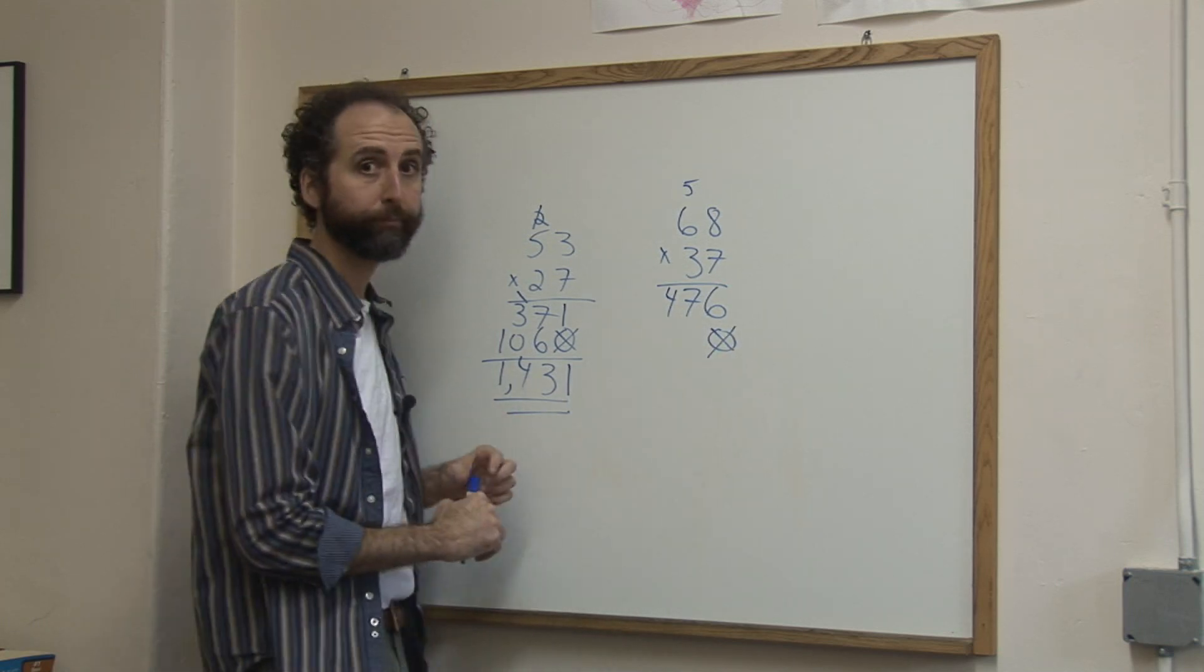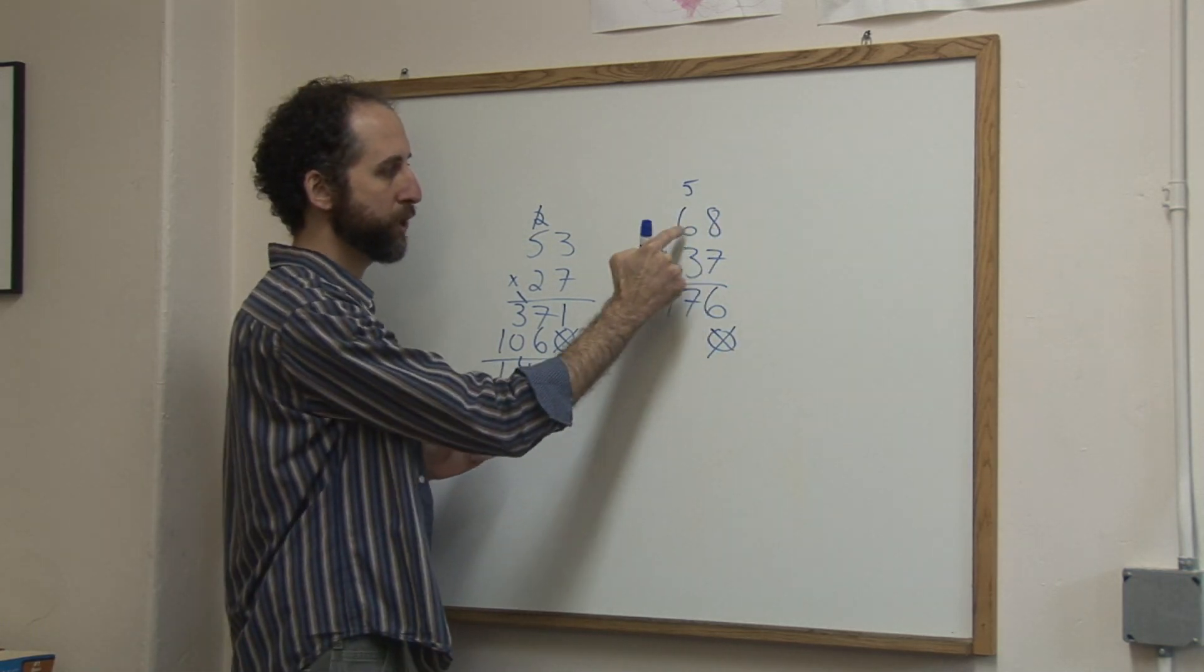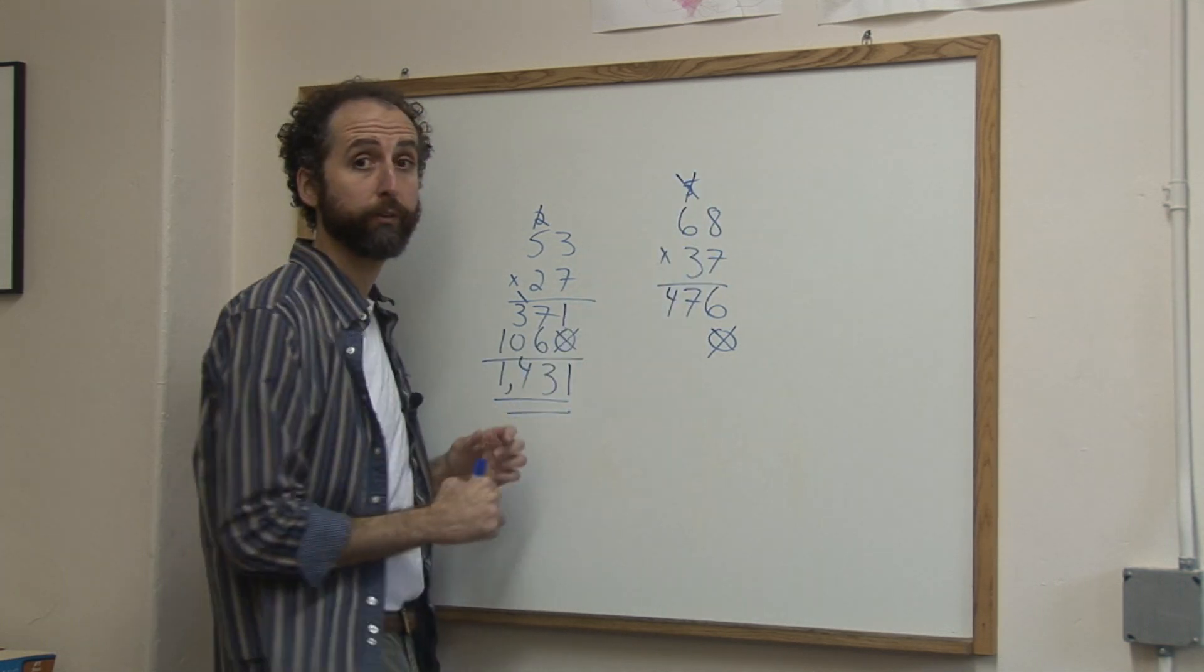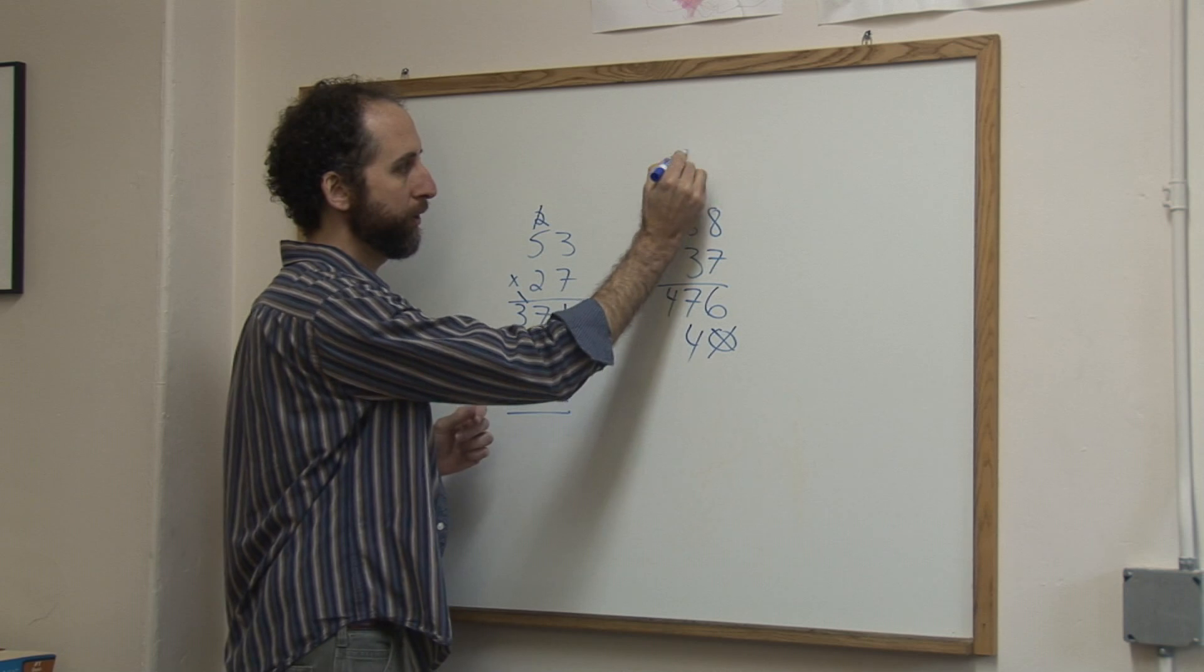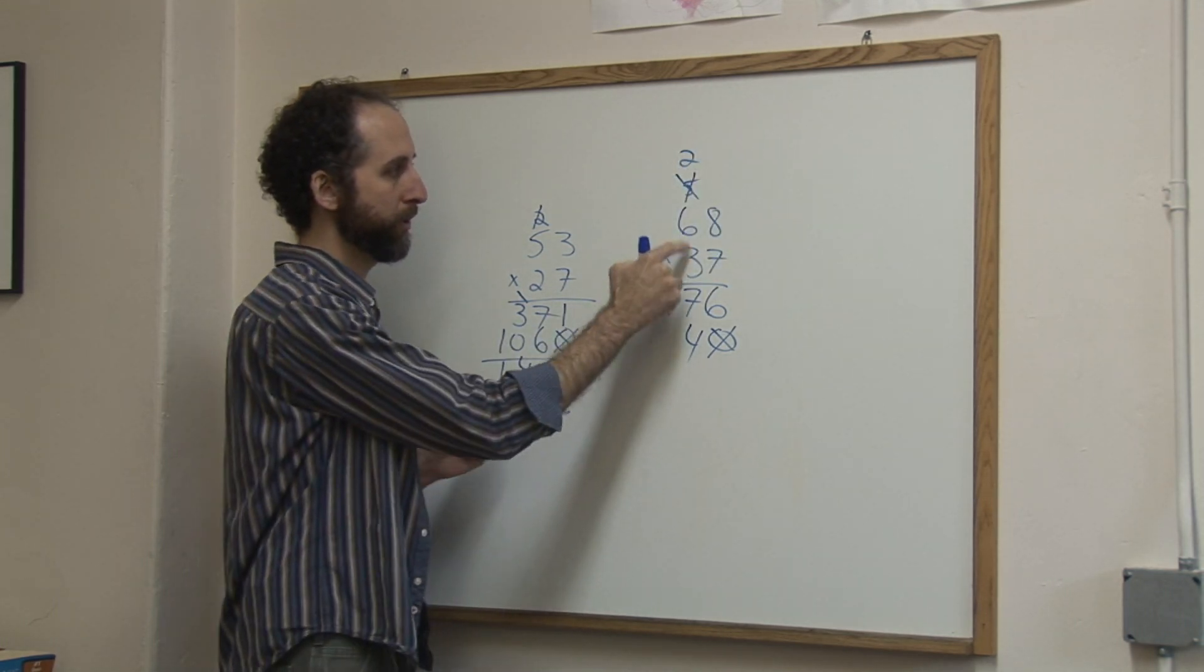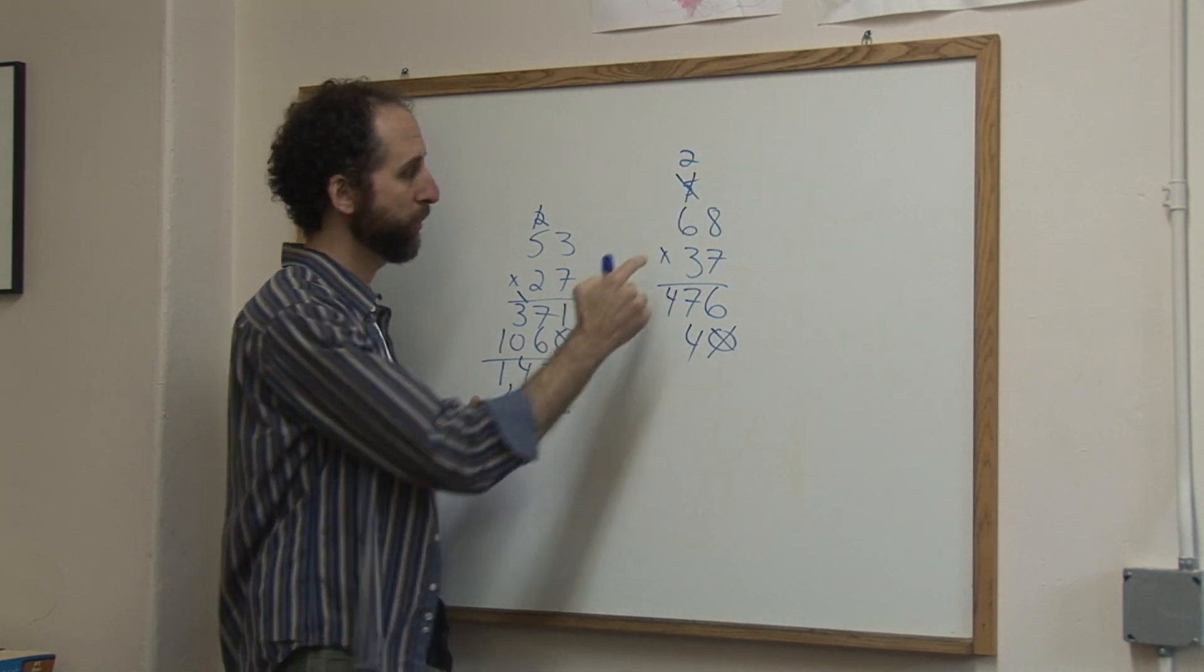Placeholder. We're going to do 3 times each of these. So 3 times 8, I'm going to cross this out also so I don't forget not to use it. 3 times 8 is 24, carry the 2. 3 times 6 is 18, plus 2 is 20.